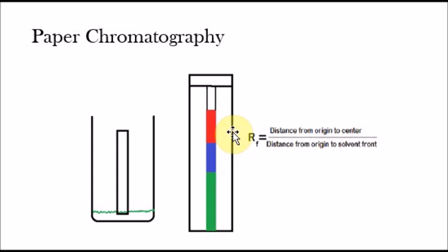So the way we measure that is the distance from the origin to the center. So let's say for the blue liquid, the origin would be at the very bottom where the liquid started rising up. So for the blue liquid it would be the origin to the center. The center that would be right here. So from again here, all the way up to there. Divided by the distance from the origin to the solvent front. So that would be from here, the origin, to the solvent front, which would be typically here.